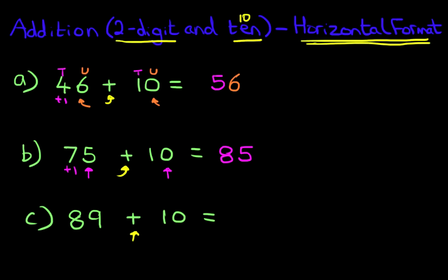Notice the 8 in the tens. 8 is going to go from 8 to 9. We are adding 1. The 9 doesn't change in 89. So 89 plus 10 becomes 99.